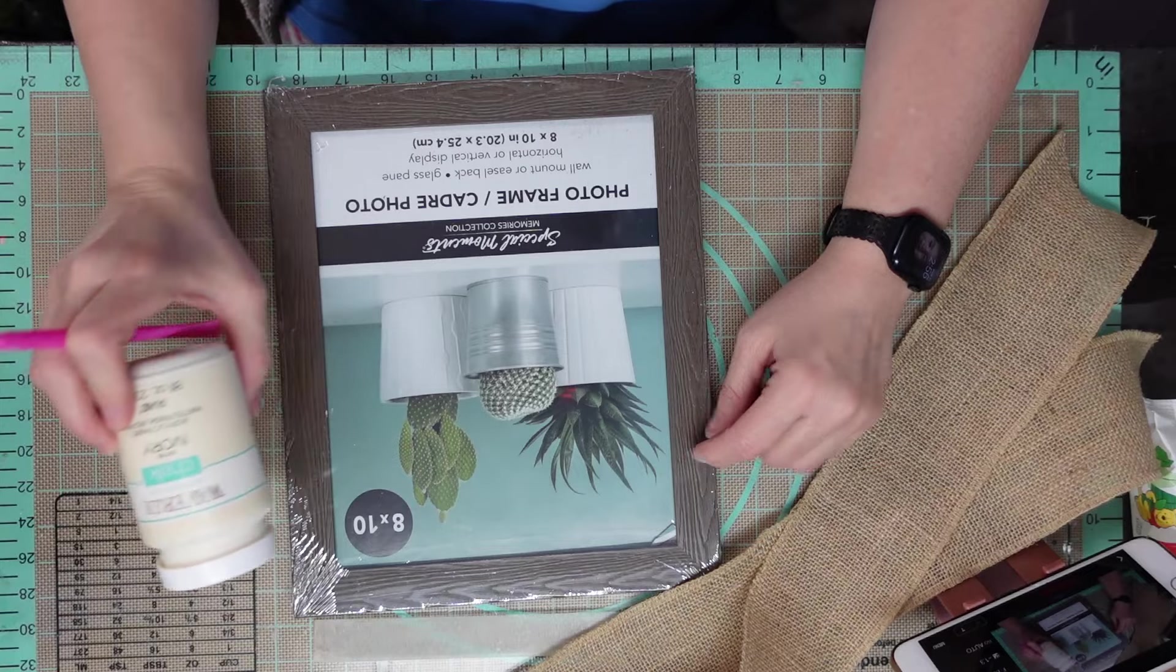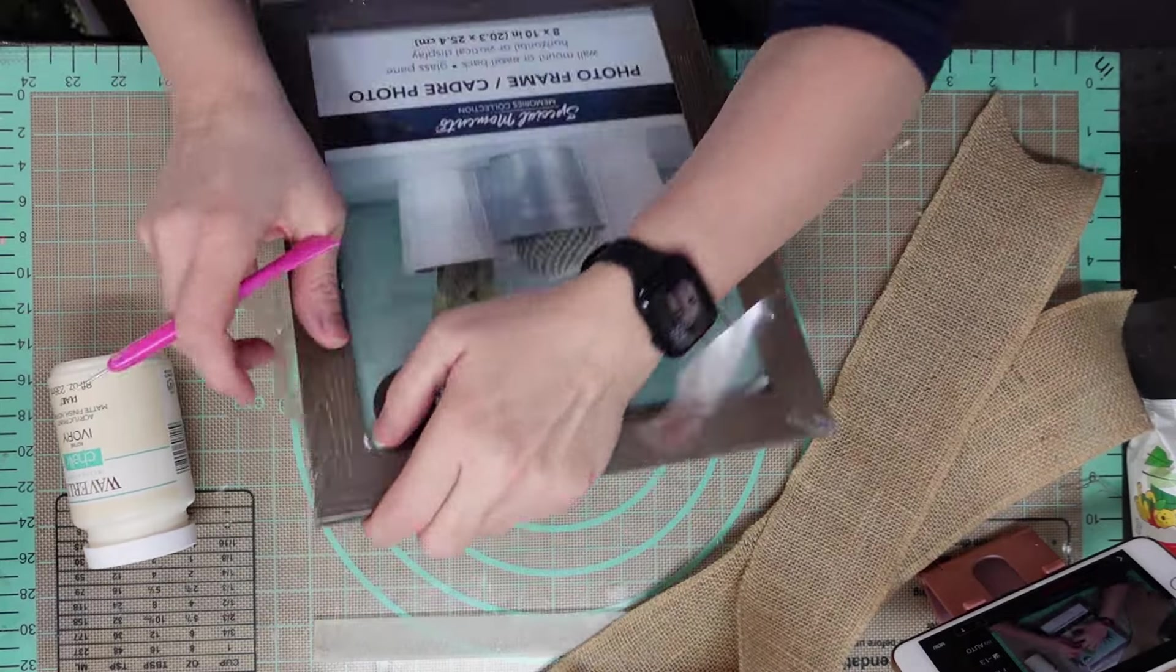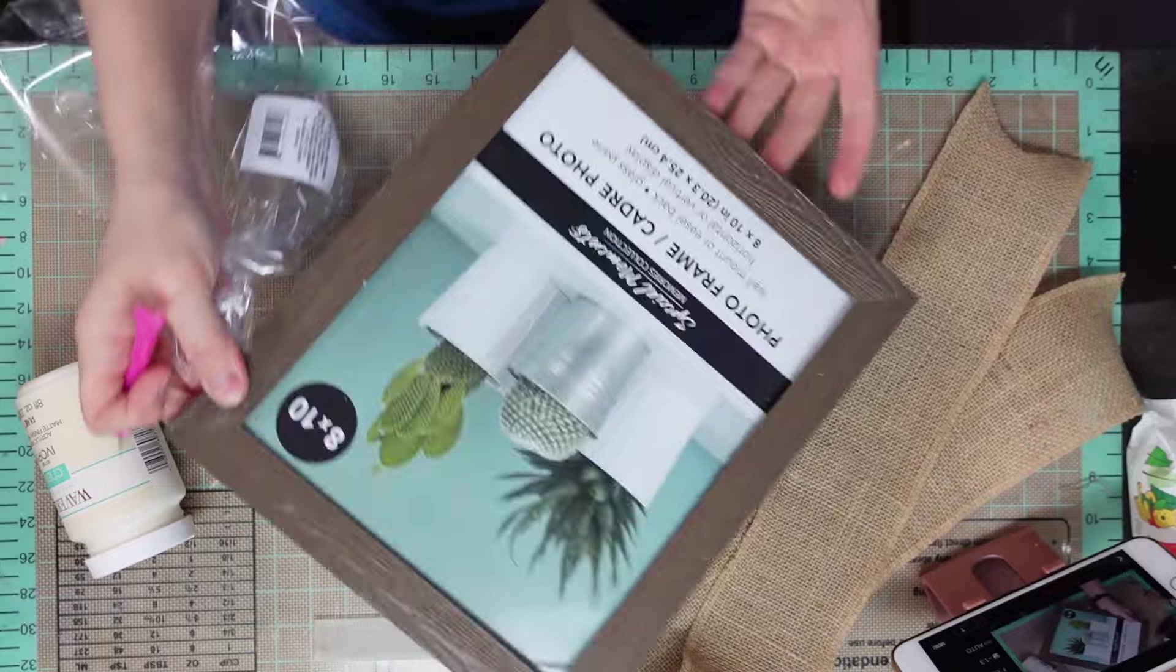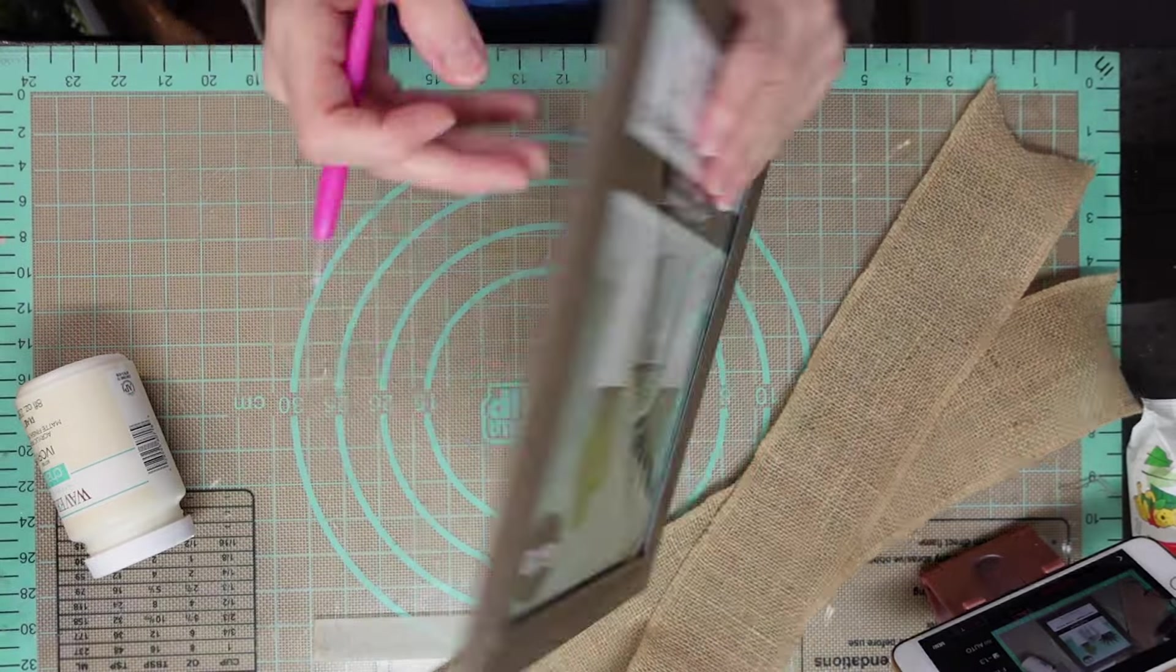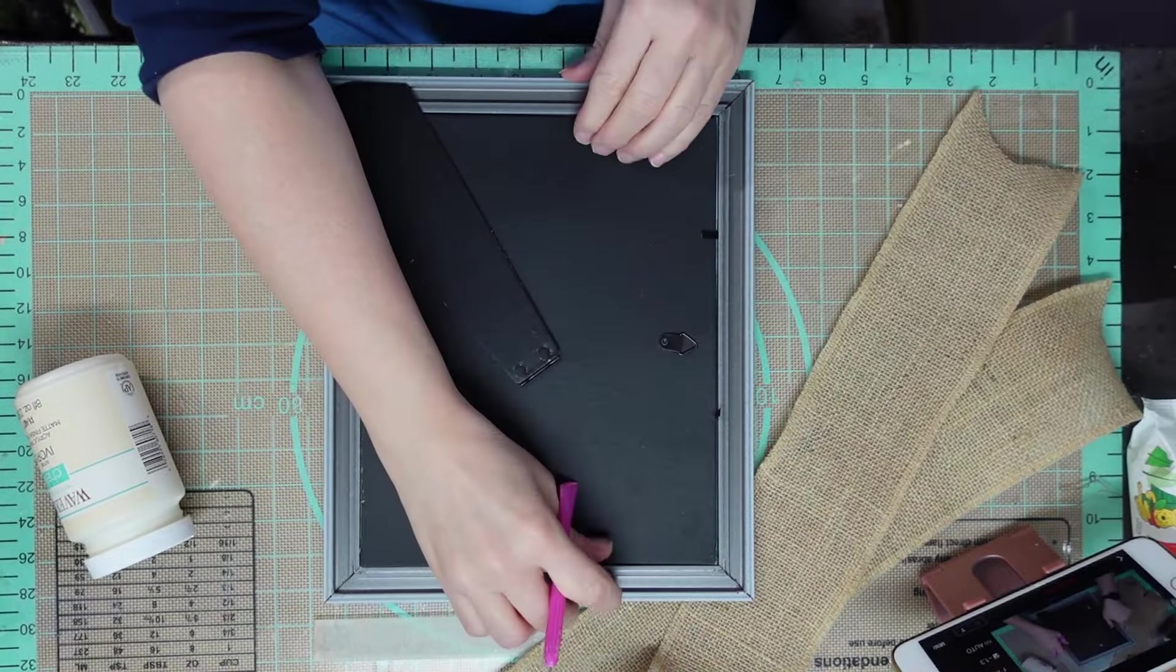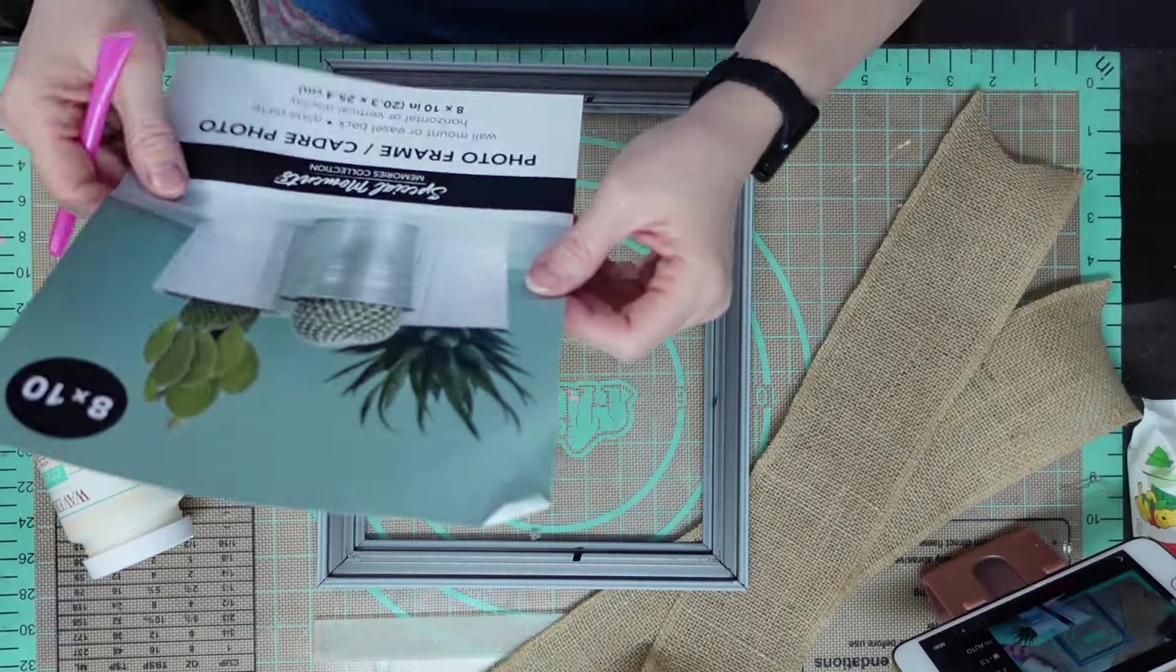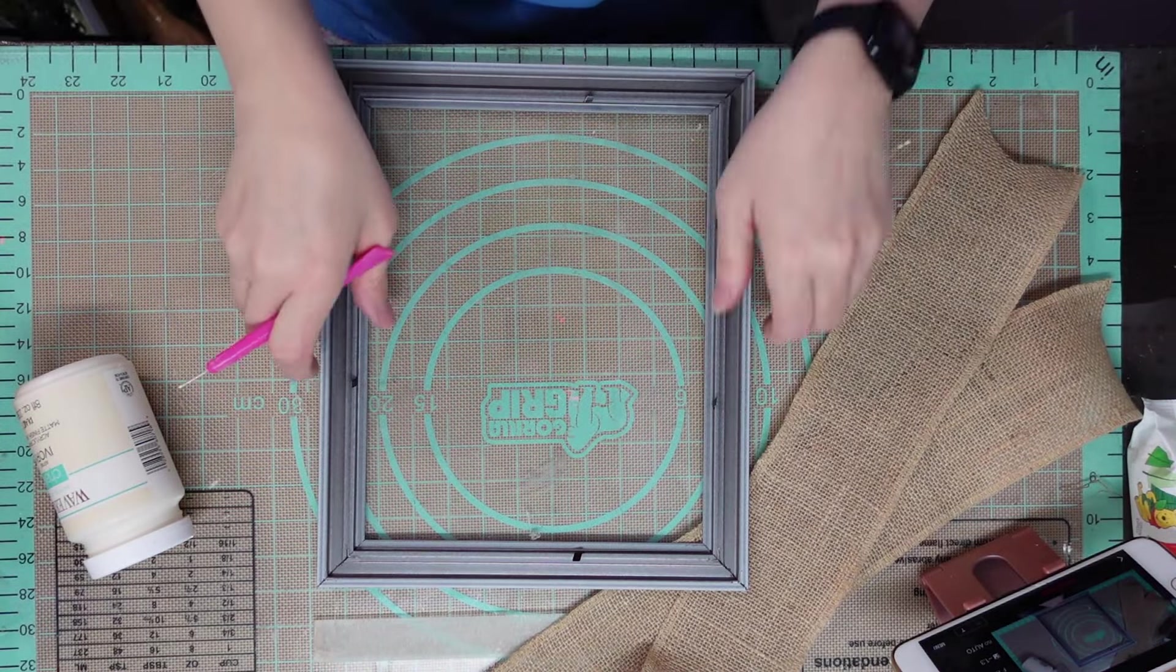So I took a Dollar Tree photo frame that I've had forever. You can use any frame, whatever you choose to put it in. I give you two options of frames anyway through these DIYs. So I don't particularly like the plasticky look of this so I'm going to take it all apart.